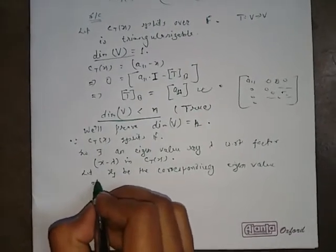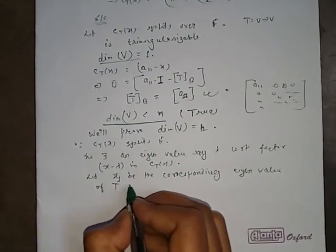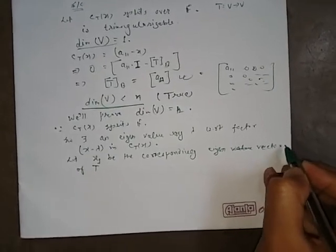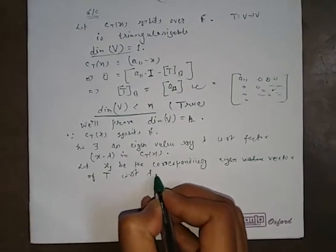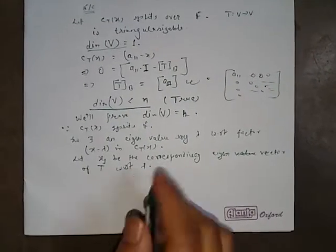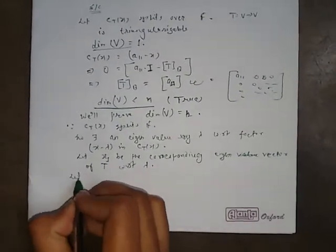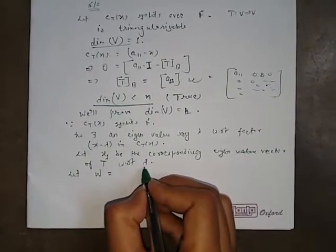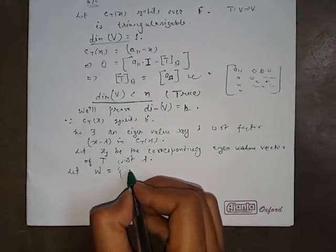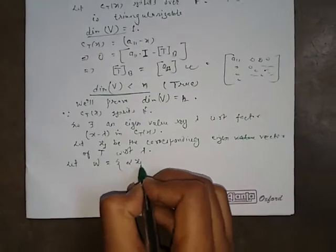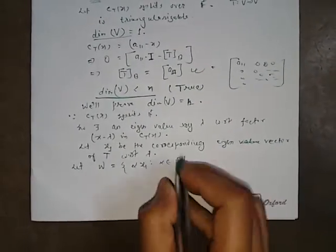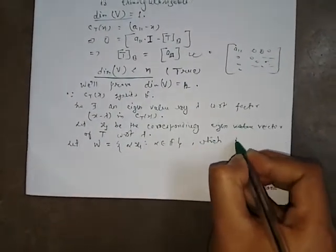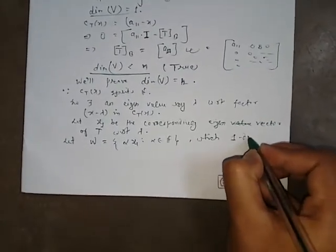Let x1 be the corresponding eigenvector of T with respect to eigenvalue lambda. Let W represent the eigenspace corresponding to the eigenvalue lambda. Then we can write W as the set of alpha times x1 such that alpha belongs to F, which is a one-dimensional vector space.